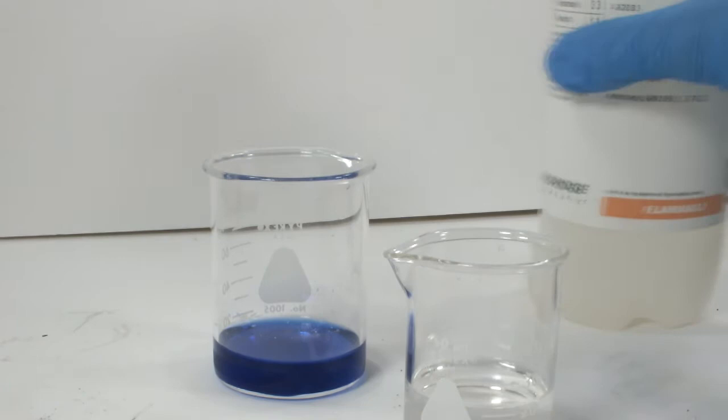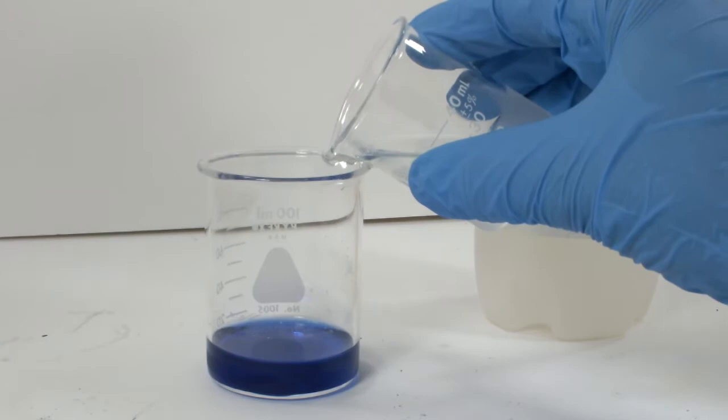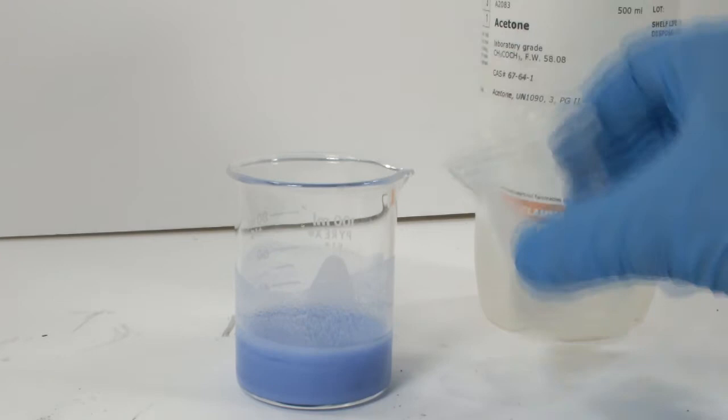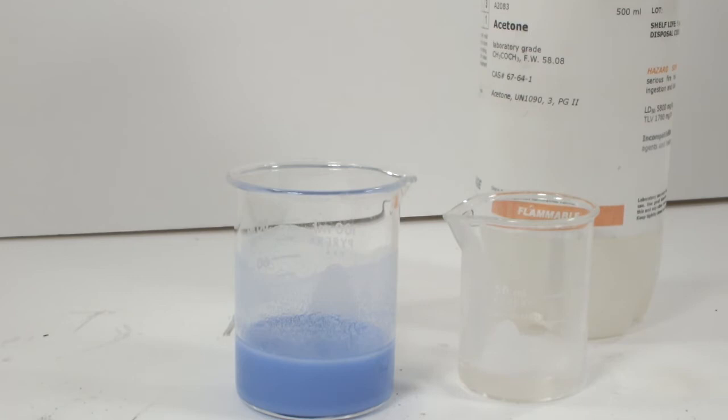This bottle of acetone is just out of the freezer, and the dark blue solution has been in the refrigerator for a while. Hopefully this will increase the yield of the complex. As soon as I add the acetone, you can see the formation of a light blue precipitate. I'm going to keep adding acetone until I can do so without seeing any more precipitate form. Then it's going to go back in the fridge.